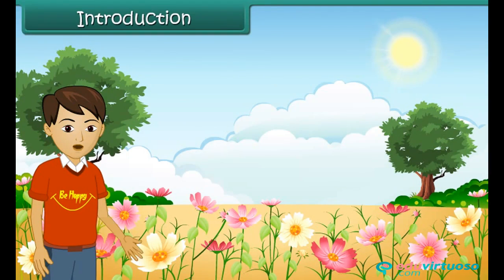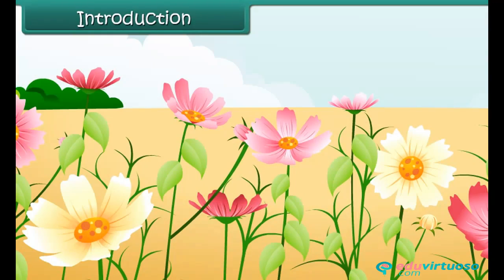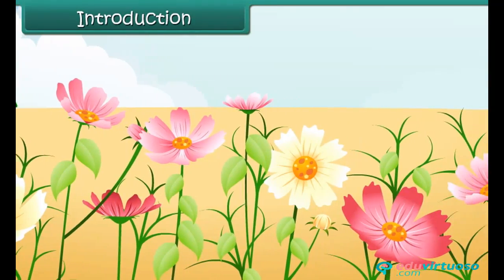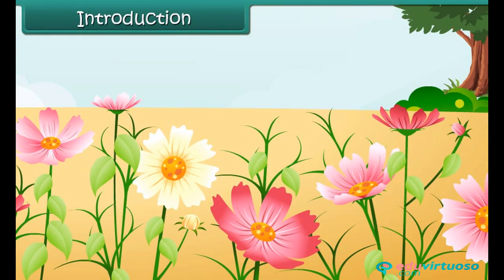The part of a plant that attracts us to it is flowers. Flowers in full bloom make us cheerful. They make our lives colorful. Just as there is a variety of flowers, there is a wide array of leaves. It is a sheer delight to watch leaves and flowers of different shapes and sizes.